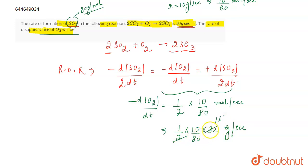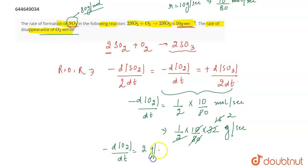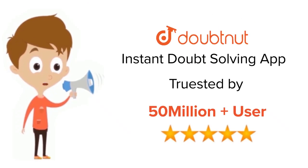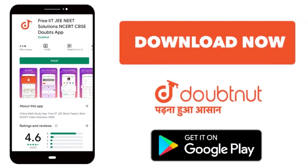Simplifying: the zeros cancel, giving 2. So the rate of disappearance of O2 comes out to be 2 grams per second, and that's the correct answer. For class 6 to 12, IIT JEE and NEET level, trusted by more than 5 crore students — download Doubtnut today.